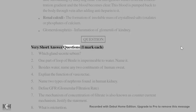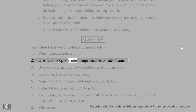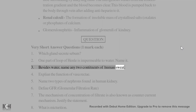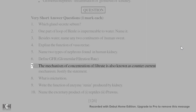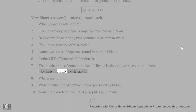Questions — Very short answer questions (1 mark each): 1. Which glands secrete sebum? 2. One part of the loop of Henle is impermeable to water — name it. 3. Besides water, name any two constituents of human sweat. 4. Explain the function of vasa recta. 5. Name two types of nephrons found in the human kidney. 6. Define GFR (glomerular filtration rate). 7. The mechanism of concentration of filtrate is also known as the counter-current mechanism — justify the statement.